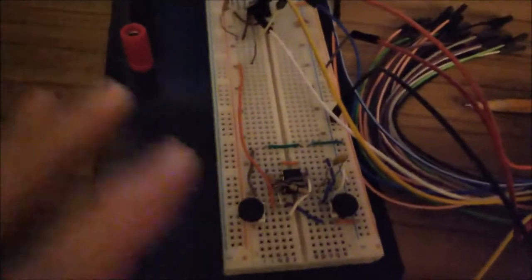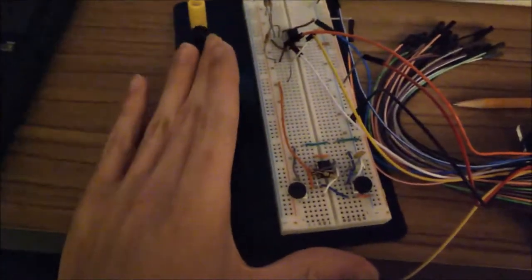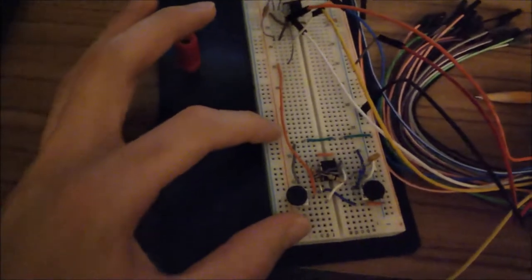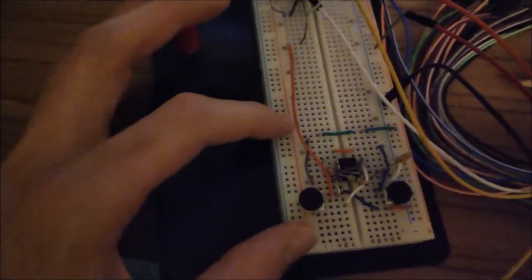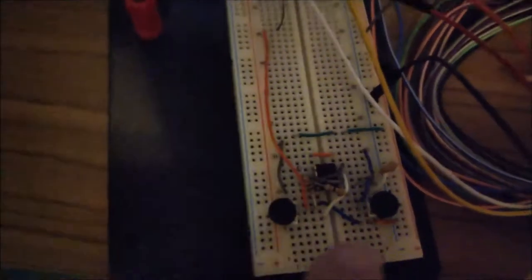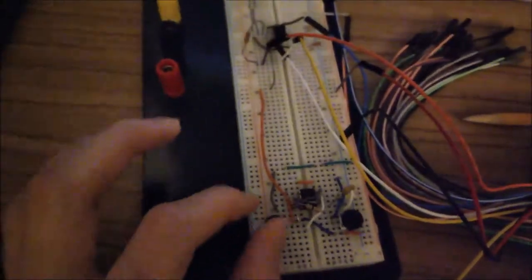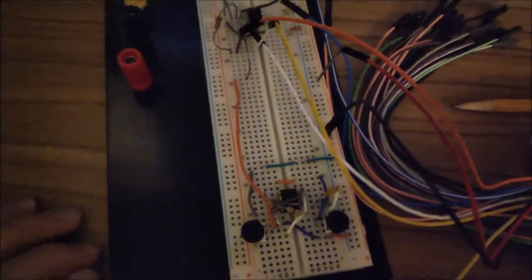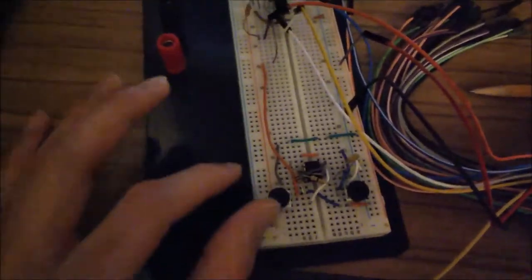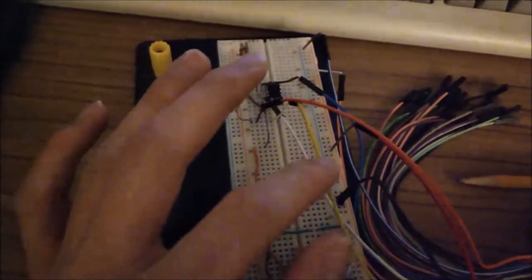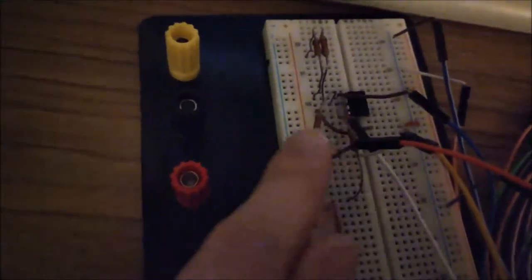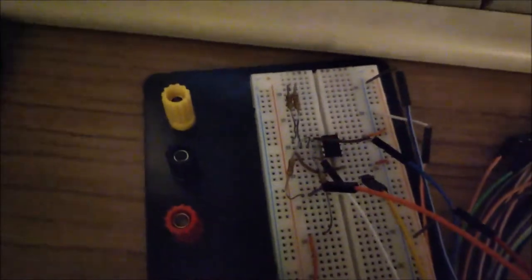Here I have a summing amplifier. I have an astable multivibrator here using a 555 timer IC where I can change the frequency and amplitude of a square wave just with these potentiometers. And I've got a 1kHz sine wave coming from the analog discovery kit. Those are getting summed up with this op amp.